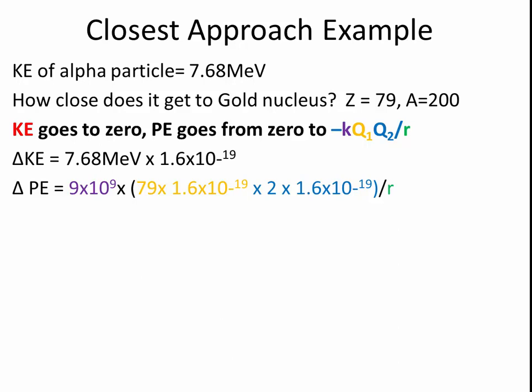The change of potential energy will be 9 times 10 to the 9, which is k, times q1, the charge of the gold, times the charge of the alpha particle which is two protons, divided by R. We rearrange this to get R and we get a value of R to be approximately 3 times 10 to the minus 14 meters.